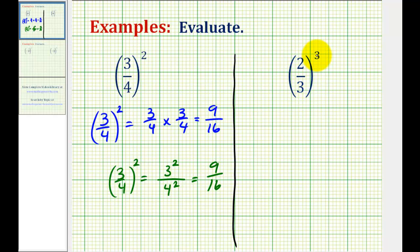So now the base is two-thirds, and our exponent is three. So writing this out in expanded form, we would have three factors of two-thirds. Again, our base is two-thirds, and the exponent is three.